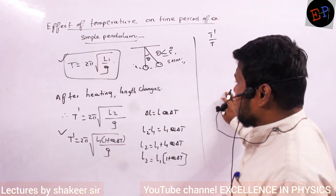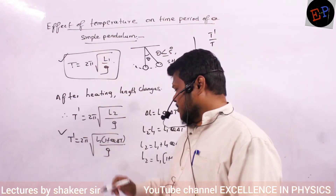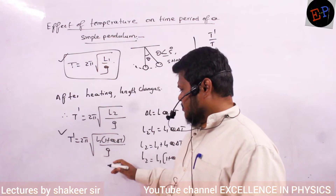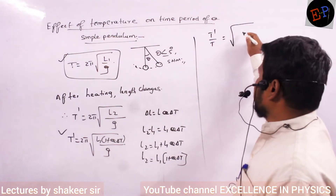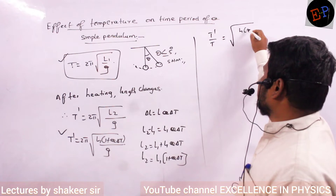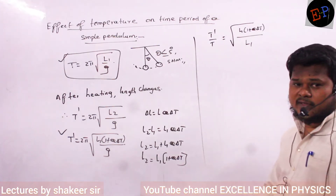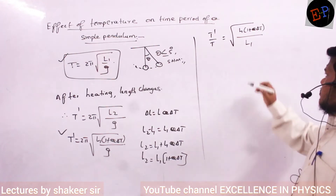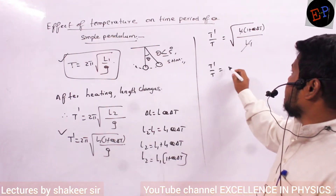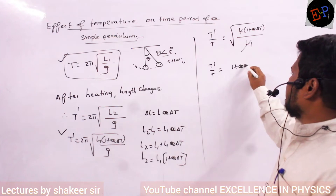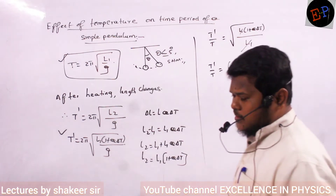T dash by T — the 2π and 2π will get cancelled, and G and G will also get cancelled. So I get the square root of L1 into 1 plus α·∆T divided by L1. L1 and L1 will also cancel. So T dash by T equals 1 plus α·∆T to the power of 1 by 2.